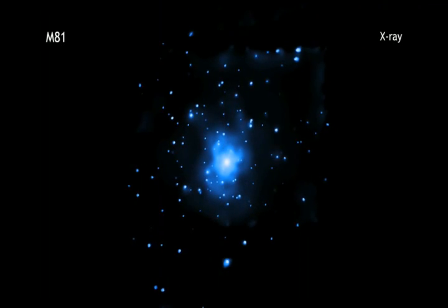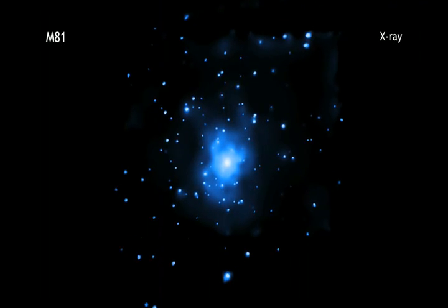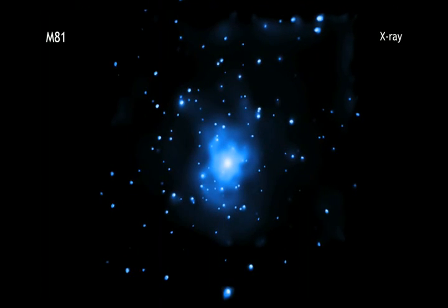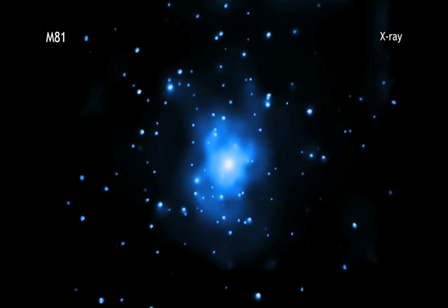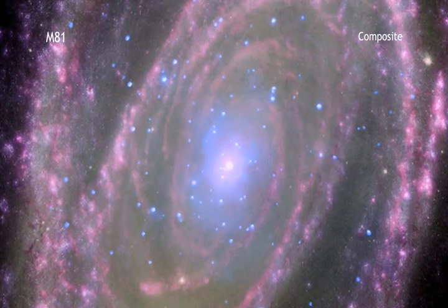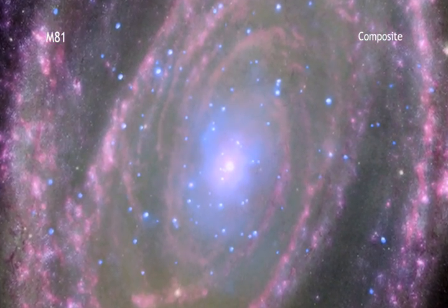At the center of M81, there is a supermassive black hole that is about 70 million times more massive than the Sun. A new study involving Chandra and other telescopes helps astronomers better understand how this black hole is growing.